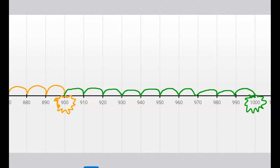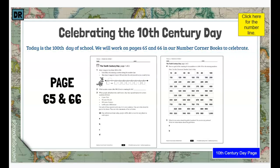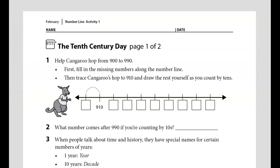Let's have a look at how we're going to celebrate. Now you can open your number corner books to page 65. Let's have a look at number one and see how we're going to help Kangaroo today. For number one, Kangaroo is asking us to help her hop from nine hundred to nine hundred ninety. The first thing you need to do is fill in all the missing numbers along the number line, just like we did together. If the first number we see is nine hundred ten.